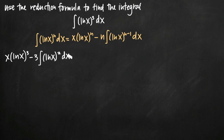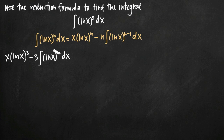This is why it's called a reduction formula. Notice that our original integral was the quantity natural log of x cubed, and our new integral is the quantity natural log of x squared. We have reduced it by a power — the degree has gone down from 3 to 2. We still haven't solved completely for the integral; we have this remaining integral of ln of x squared, but we can apply the reduction formula again because now we have the same form, just with a new n value of 2.